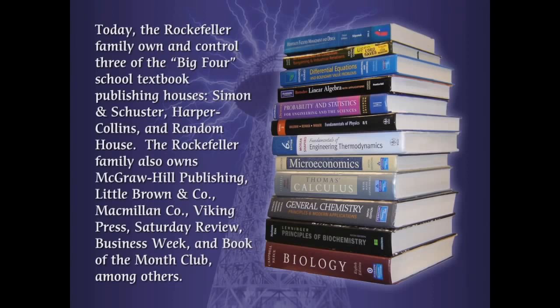Today, the Rockefeller family own and control three out of the big four school textbook publishing houses, including Simon & Schuster, HarperCollins, and Random House. The fourth is Pearson, which the Rockefeller family does not outright own but largely influences. The Rockefeller family also owns McGraw-Hill Publishing, Little Brown & Company, Macmillan Company, Viking Press, Saturday Review, Business Week, and Book of the Month Club, among many others. They totally dominate publishing. They were agents of the Rothschilds and Morgans during the turn of the 20th century — these globalists are who control those publishing houses.